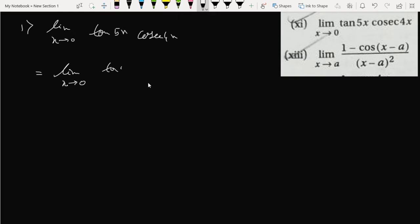5x by 5x. I'm writing 5x extra in the denominator, so 5x with the numerator. So it becomes 1 by sine 4x, as we all know cosec x is the reverse of sine x.